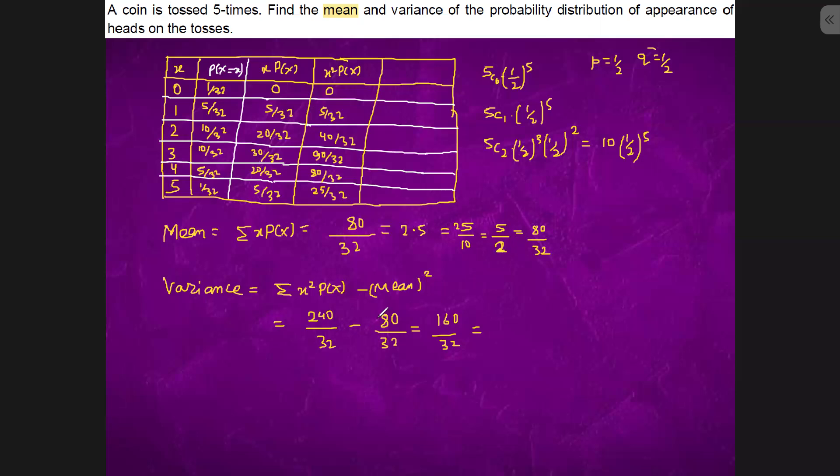We will leave it up to here. This is 25 upon 4. We will multiply 8, divide by 8, it will become 32. 240 minus 25 times 8 is 200. So, this is 40 upon 32, which is 1.25.